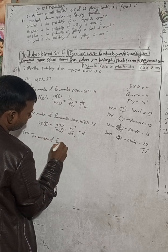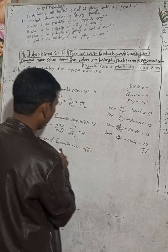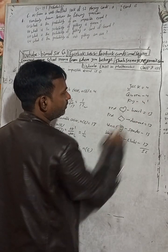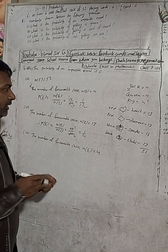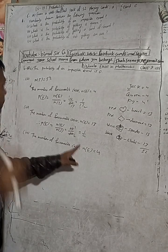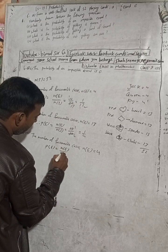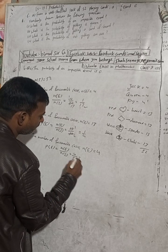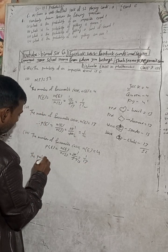Question four: what is the probability of getting an ace? How many aces are there in the deck? Jack is 4, queen is 4, king is 4, and ace is also 4. So the number of favorable cases is 4. Therefore P(E) = 4/52 = 1/13.